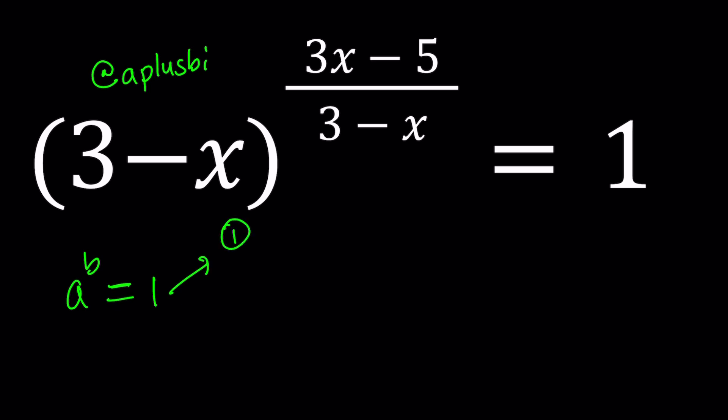First scenario is where b is equal to 0. That means any number to the power 0 is 1, right?